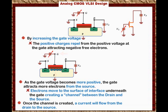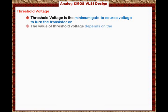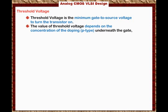This introduces a very important concept in MOS devices: the threshold voltage. The threshold voltage is the minimum gate-to-source voltage required to turn the transistor on — to create that channel or link between the drain and the source. The value of the threshold voltage depends on the doping concentration of the P-type material underneath the gate, and it can be adjusted to develop different threshold voltages for a given technology.